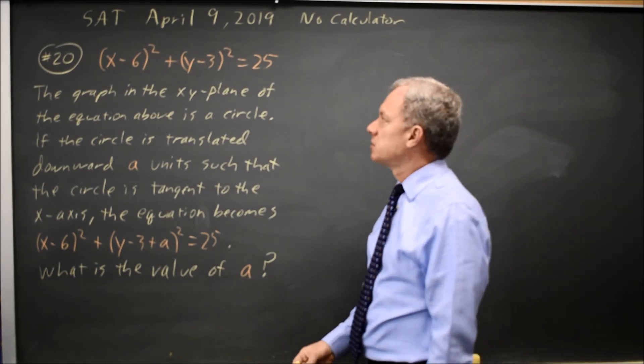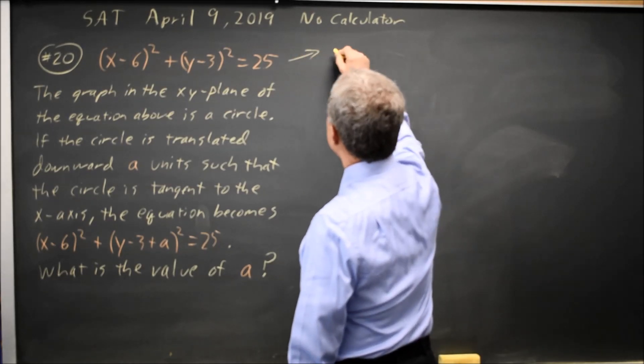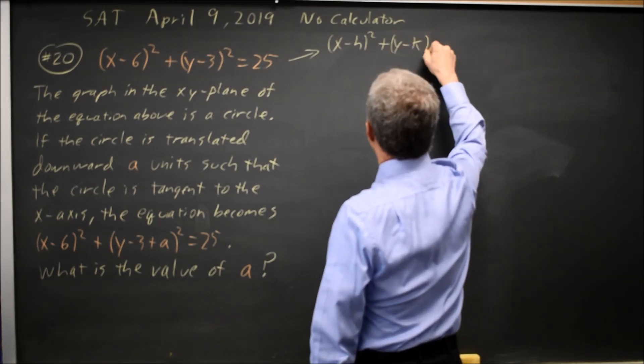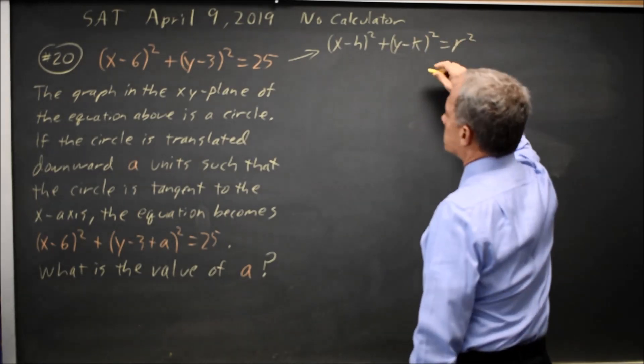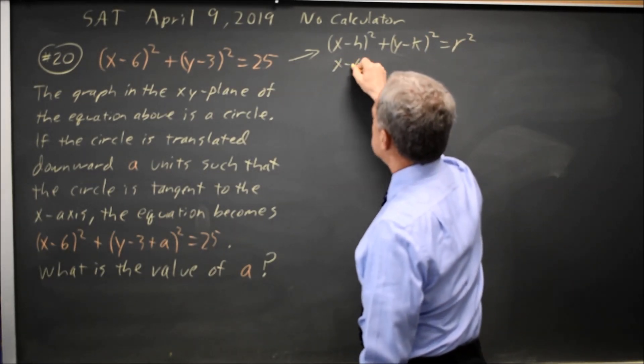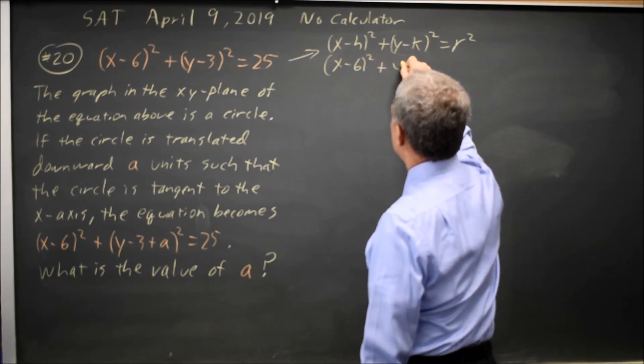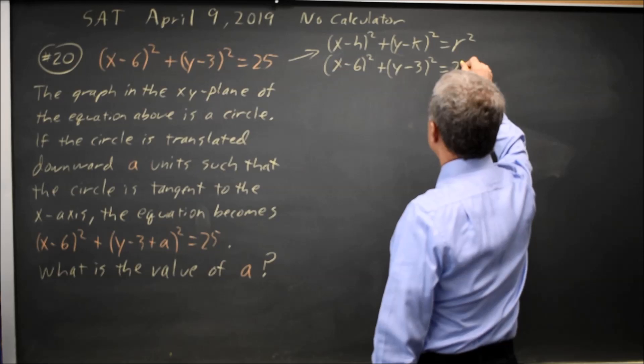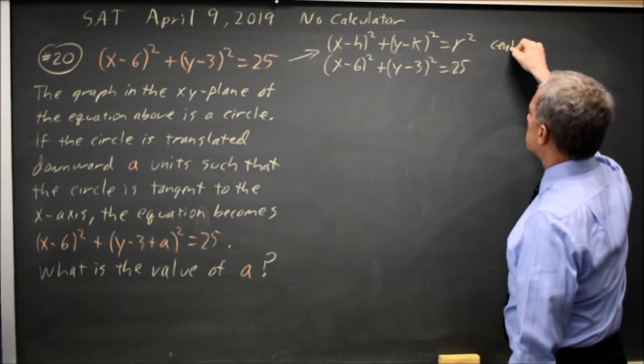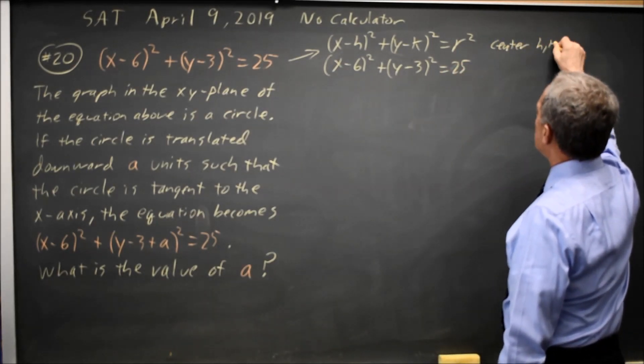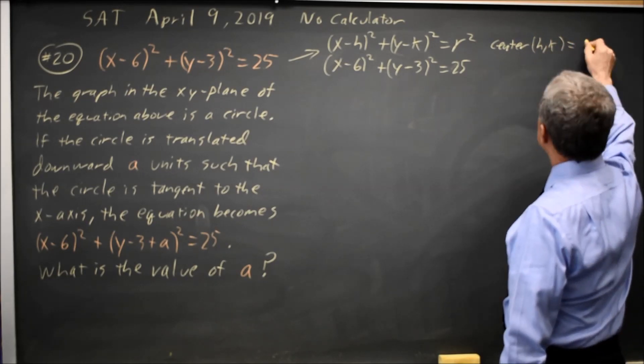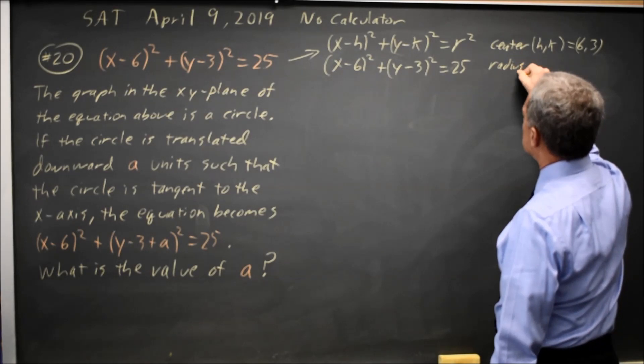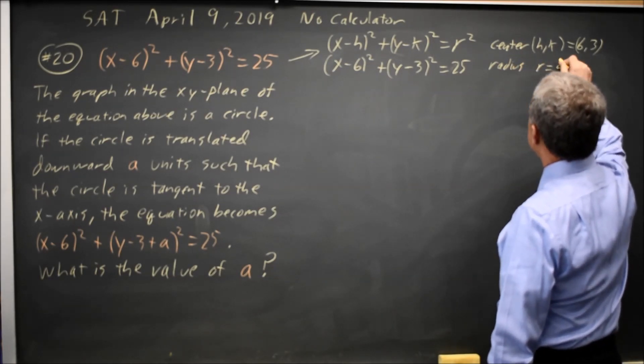So let's graph the equation of the circle. First of all, the general equation is x minus h squared plus y minus k squared equals r squared. And we have x minus 6 squared plus y minus 3 squared equals 25. So the center hk is 6, 3, and the radius r is equal to 5.